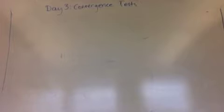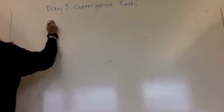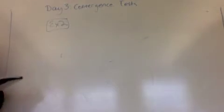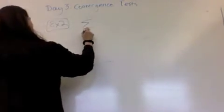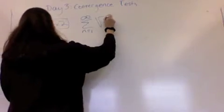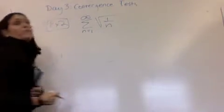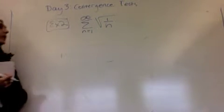What's example 2? Is it okay that I just go through these examples like this? If you guys get bored, just tell me and I'll stop. N equals 1 to infinity of the square root of 1 over n. Convergent or divergent — just shout out.